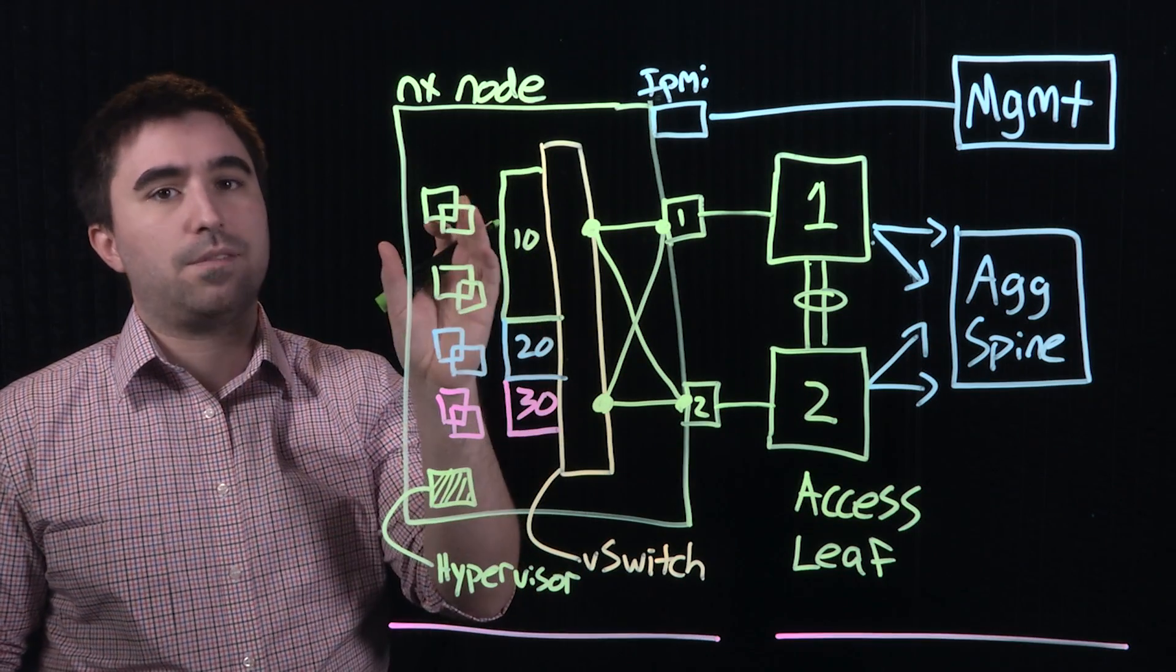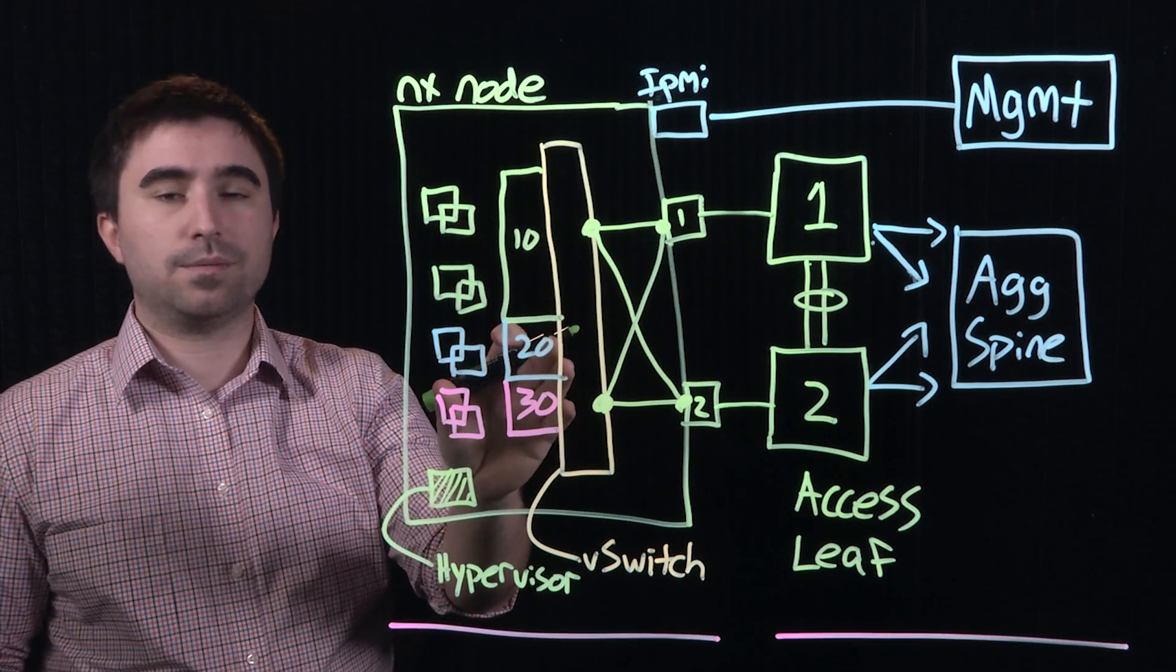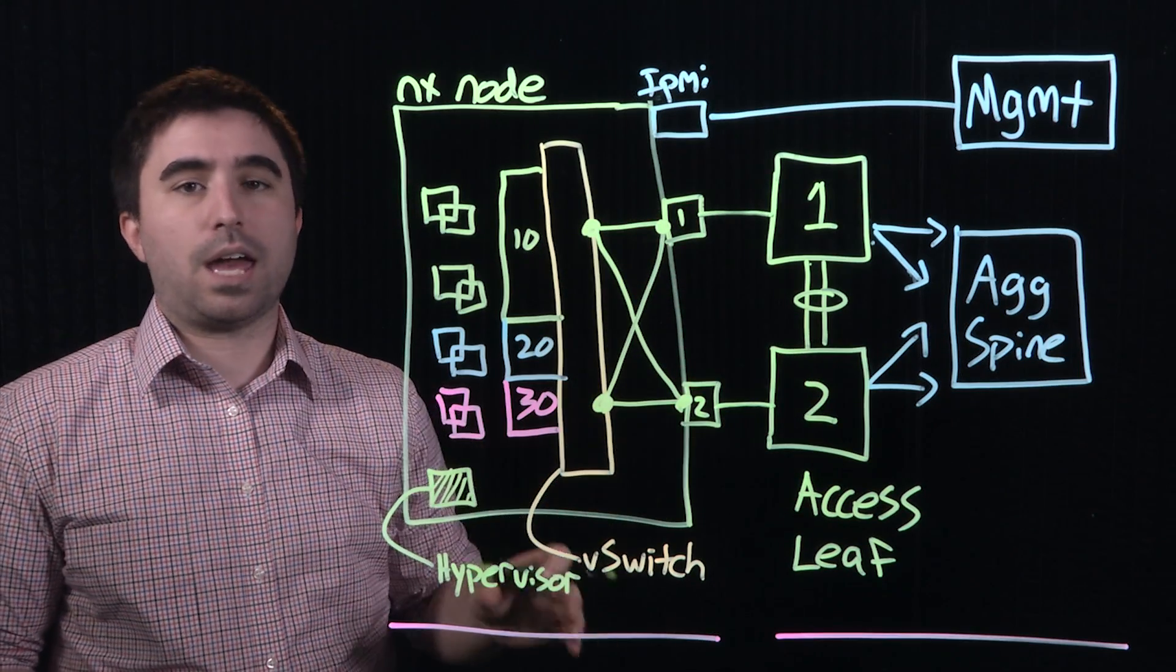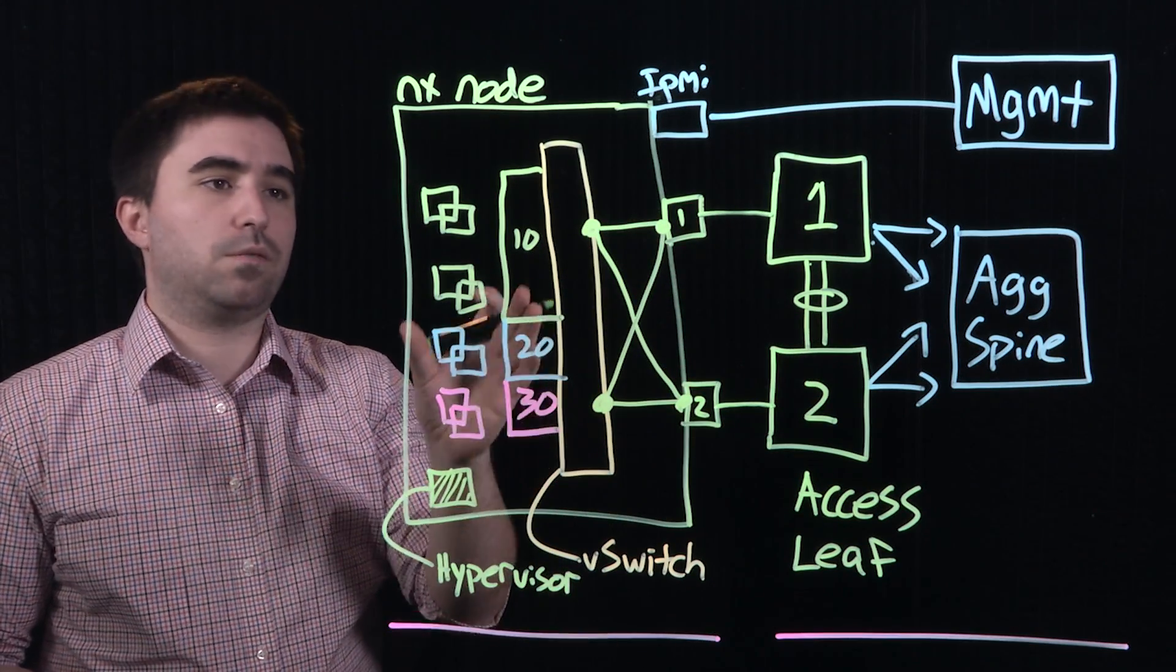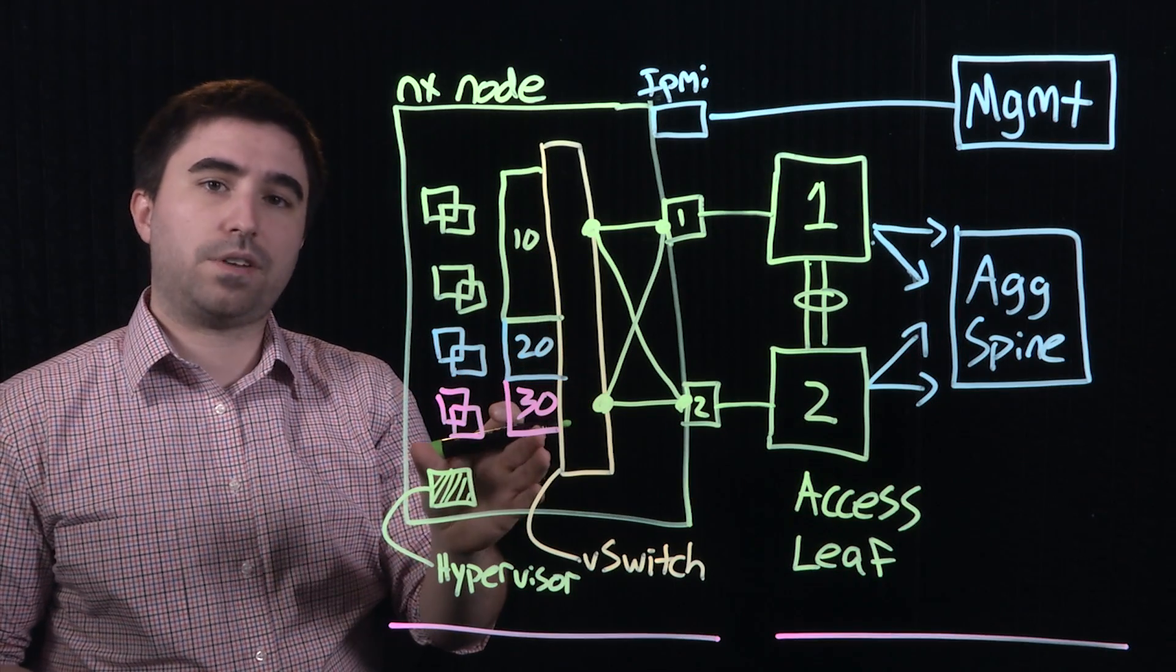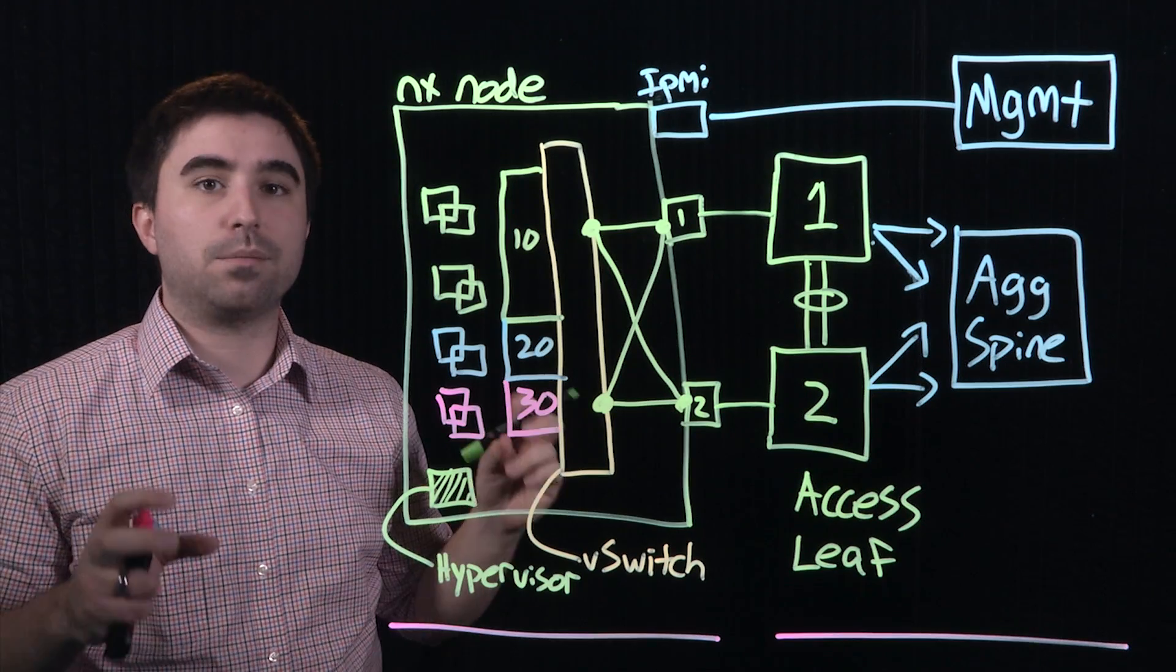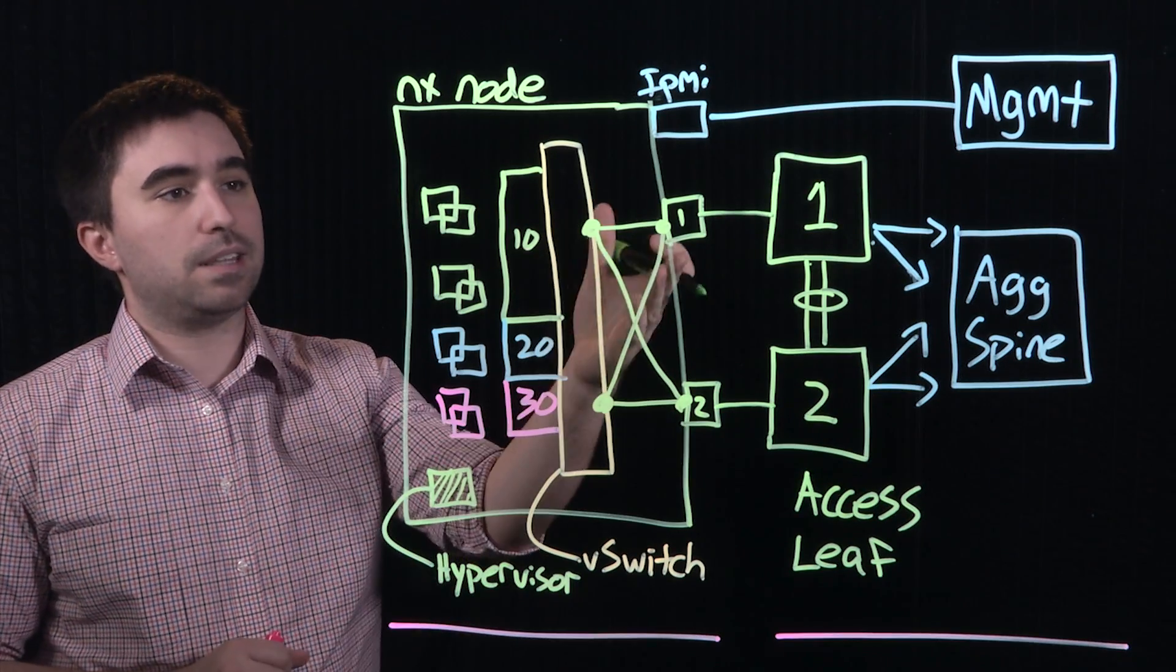Option number one is to have the virtual switch control the failover, and option number two is to have the network switch control the failover. Having the virtual environment and virtual switch control the failover is generally the simplest because it allows you to maintain a plug and play type environment into these network switches.